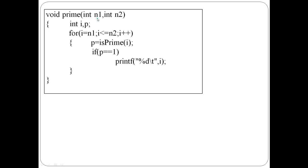The function is called with n1 and n2. Starting from i equal to 10, the is_prime function is called for each value. For i equal to 11, is_prime returns 1 and 11 is displayed. Values 12, 13 up to 20 are each passed to the is_prime function. If prime, the number is displayed; otherwise it is discarded.